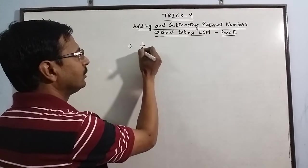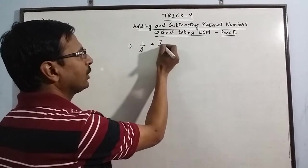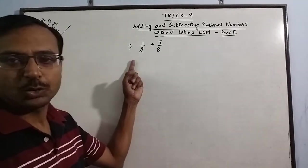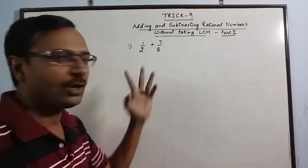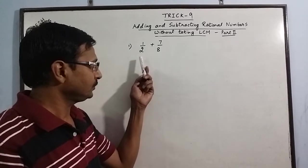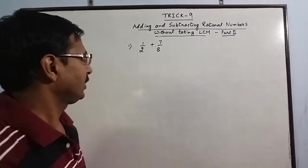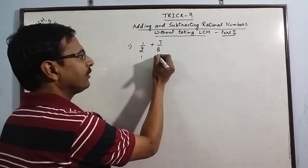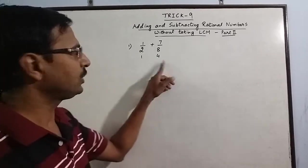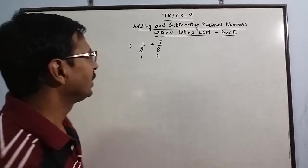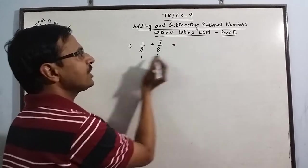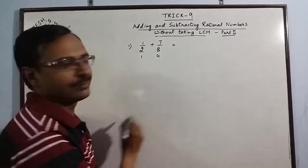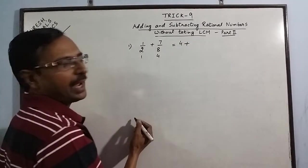Let me take a very simple example first: 1 upon 2 plus 7 upon 8. Now here the denominators 2 and 8 contain a common factor, so we cancel out this common factor so that we arrive at 1 and 4.